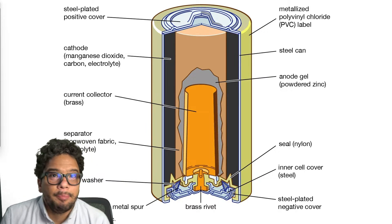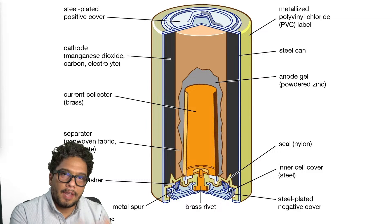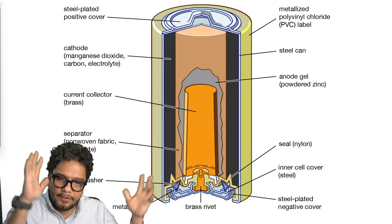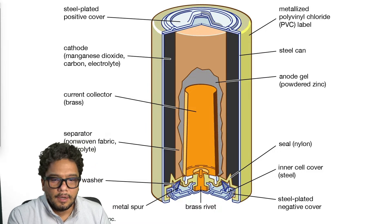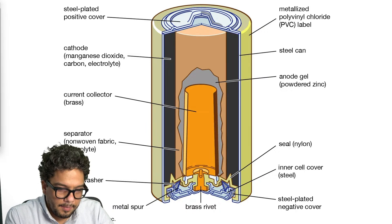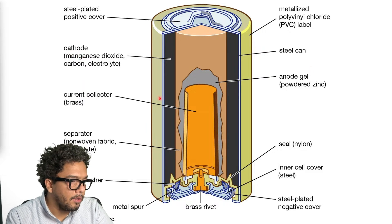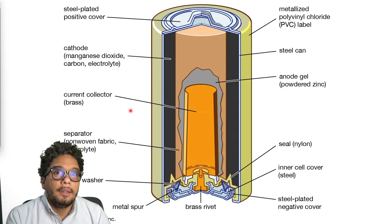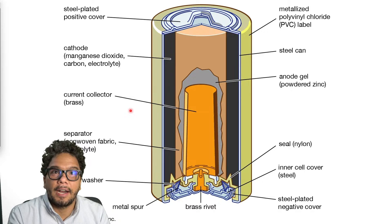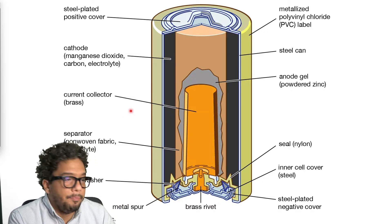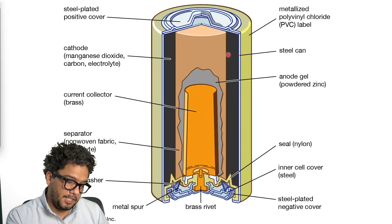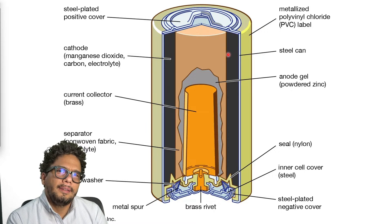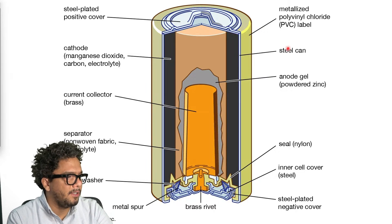Starting with battery materials — this is the main topic today. In the image you are seeing on your screen, you have a cartoon of a battery, and you can see different labels of different parts of the battery. Probably the most interesting or main components are the cathode, anode, and separator. These are the main components to produce electrons that at the end will deliver the power to different kinds of devices, vehicles, and many things.